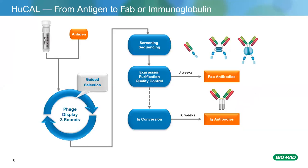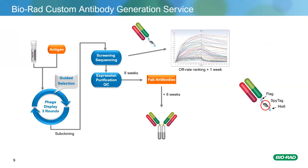This schematic shows how we used to do things — the versatility was built into how we manipulated library screen conditions. Previously, customers would choose an antibody format before the project started, and after subcloning from phage vector into an E. coli expression vector, they received all clones in that single format. What we do now with our new technology is generate almost all antibodies in one particular format: a monovalent FAB with a spy tag on the C-terminus of the heavy chain.